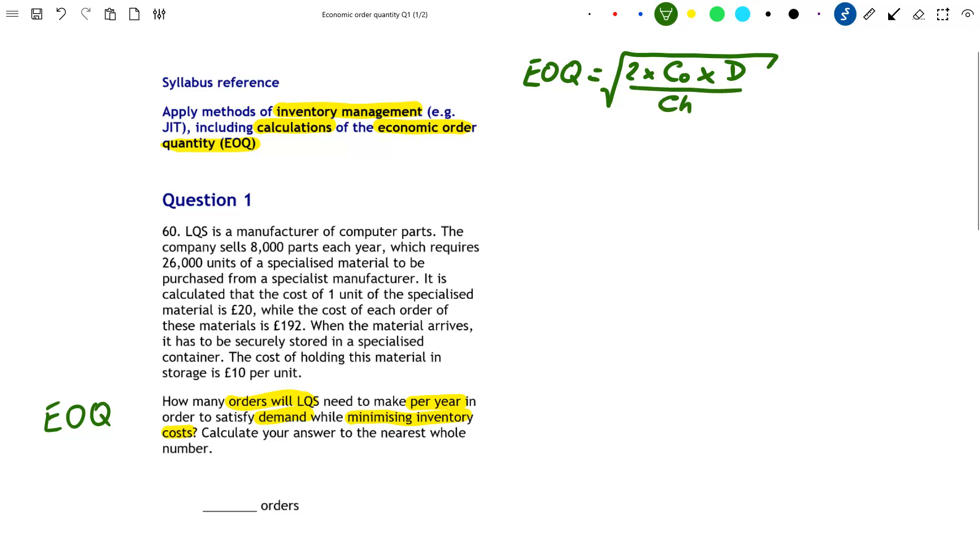Now, what do these letters mean? Well, firstly, D is quite simply the demand. It is the number of units that LQS will need in order to satisfy its customers. But there is a little caveat with this, which we'll see in the scenario in a second.